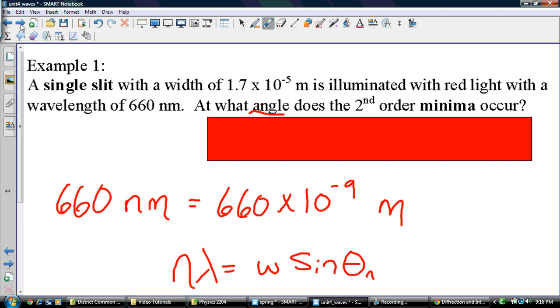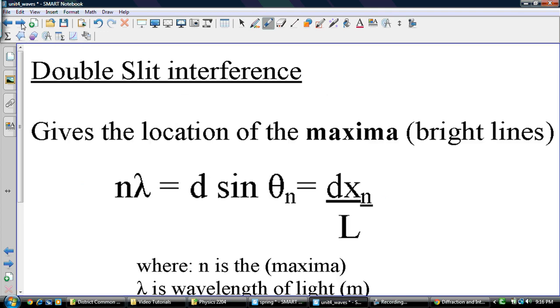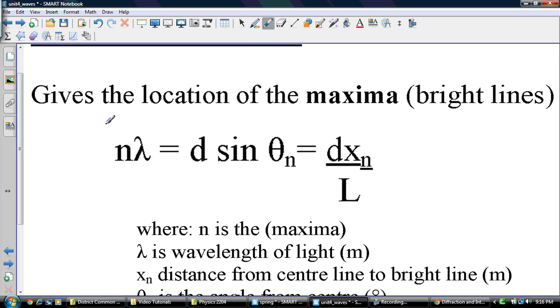And here's an example. We won't go through it. And another example. Double slit interference has this formula. This is really the most important part of it. And that's what we'll be given on your formula sheet. It gives a location of the maxima bright lines.